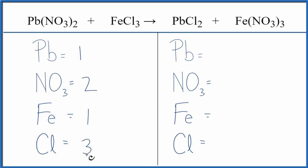one iron, and three chlorine atoms. On the product side, one lead, one nitrate times three gives me three of those, one iron, and two chlorines.